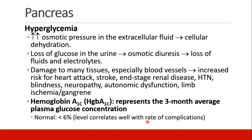Hyperglycemia will lead to increased osmotic pressure in the extracellular fluid and cellular dehydration. As glucose is lost in the urine, an osmotic diuresis occurs, similar to what we see with mannitol, and patients will lose fluids and electrolytes. Many tissues can be damaged by chronic hyperglycemia, especially blood vessels, where we'll see increased risk for heart attack, stroke, end-stage renal disease, hypertension, blindness, neuropathy, autonomic dysfunction, and limb ischemia or gangrene.